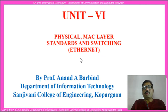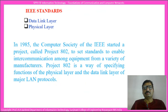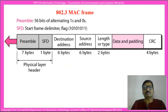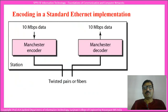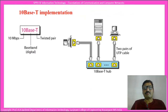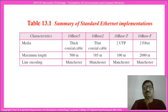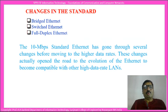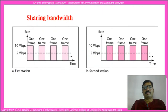Let us go on to the second part of the lecture on Ethernet. Let us first see the changes in the standard Ethernet. The 10 Mbps standard Ethernet has gone through several changes before moving to the higher data rates. These changes actually opened a road to the evolution of Ethernet to become compatible with the other high data rate LANs.